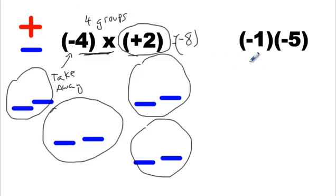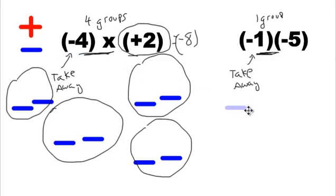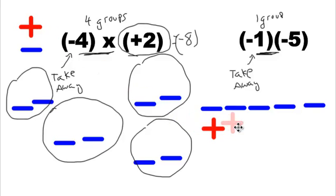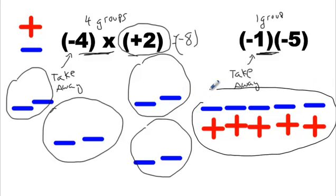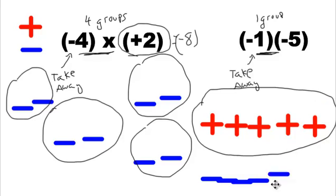Now we have one more to go — we've got to take away one group of negative five. There's nothing to take away, so I've got to create an invisible group — something to take away without really changing anything. Here's my group of negative five coming up, and here's my fifth one. I'll counterbalance them with these positives. Now I've got a group of nothing — I haven't really damaged anything, there's still nothing in front of me. But now I can take away those five negatives — one group of negative five. Take away the group of negatives. They were together. The answer is positive five.